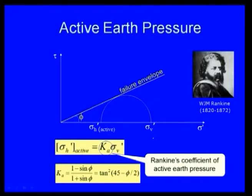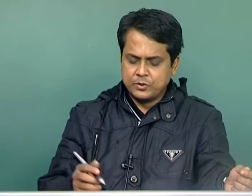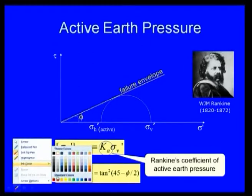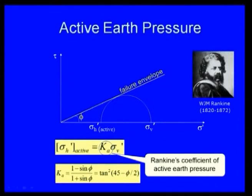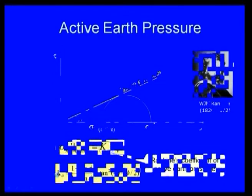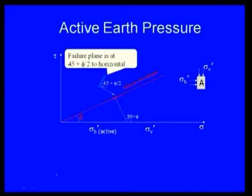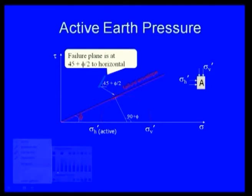Active earth pressure was given by Rankine (1820–1872). Sigma H prime active equals KA times sigma V prime, where KA equals (1 minus sin phi) divided by (1 plus sin phi), which equals tan squared (45 degrees minus phi/2). This is Rankine's coefficient of active earth pressure KA. The failure plane is at 45 degrees plus phi/2 from the horizontal.